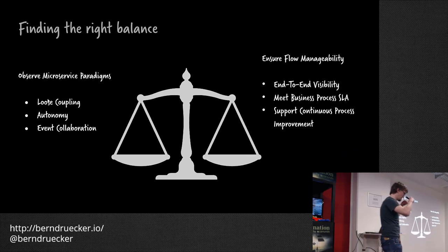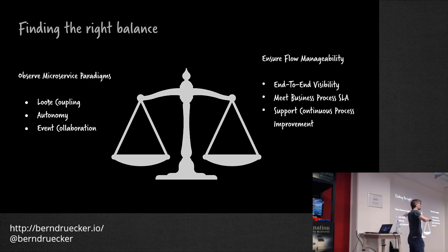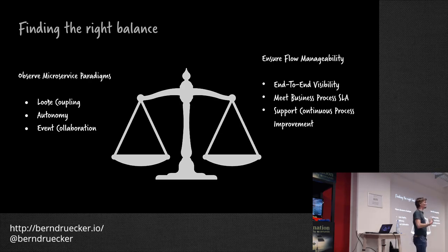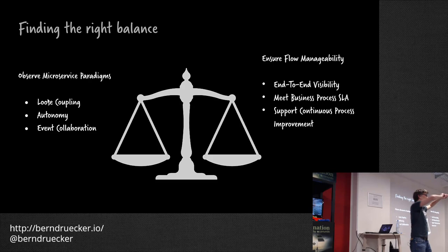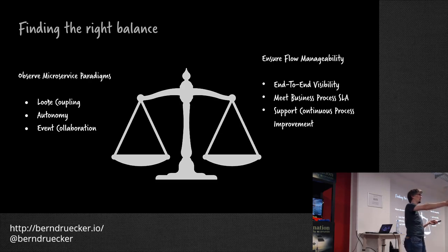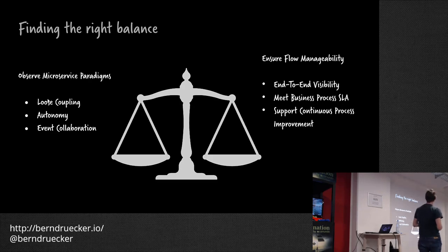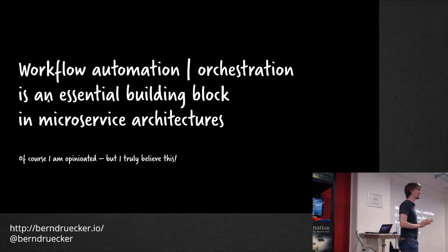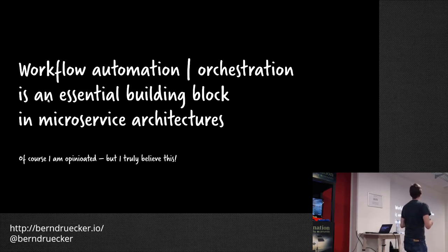From my perspective, it's a lot about finding a balance. Choreography is there for a reason — you want loosely coupled services, autonomous teams, and event-driven collaboration, which is good for some use cases. But sometimes you also need to understand the end-to-end flow, meet SLAs — for example, Zalando wants to know if an order isn't shipped within 24 hours — and only if you understand the flow can you improve it. I believe orchestration is a really central building block in these architectures.